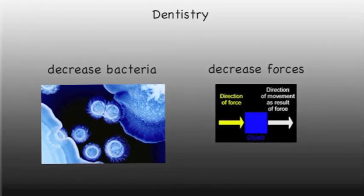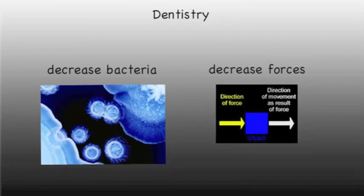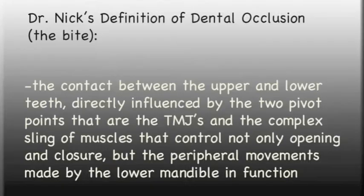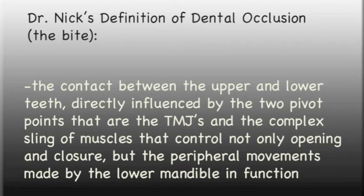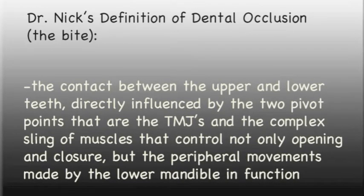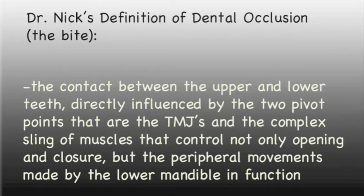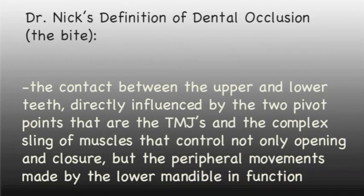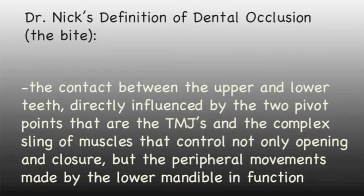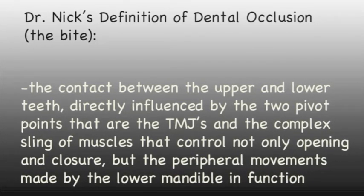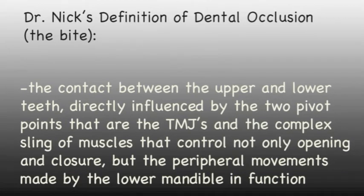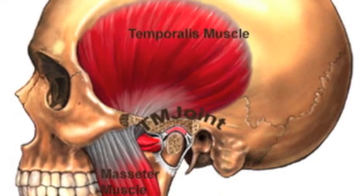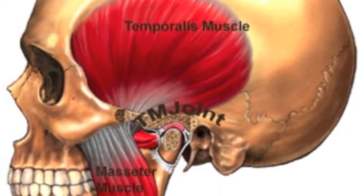Dentistry deals with two primary goals: decreasing bacterial load and decreasing excessive forces in the masticatory, or chewing, system. This presentation deals with managing the forces generated by the human bite or occlusion — defined as the contact between the upper and lower teeth, directly influenced by the two pivot points that are the TMJs, and the complex sling of muscles that control not only opening and closure, but the peripheral movements made by the lower mandible.